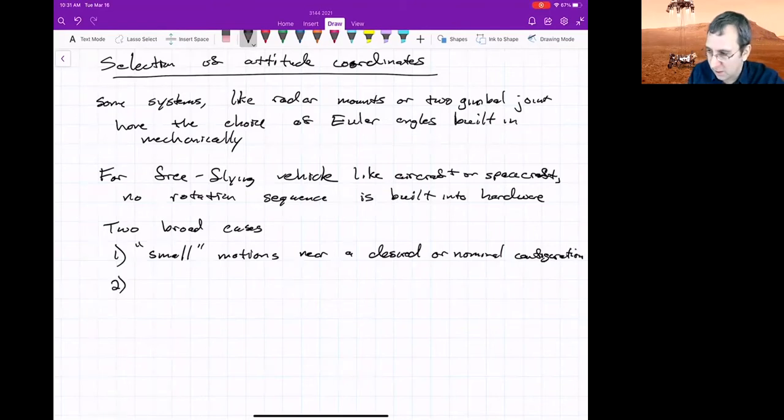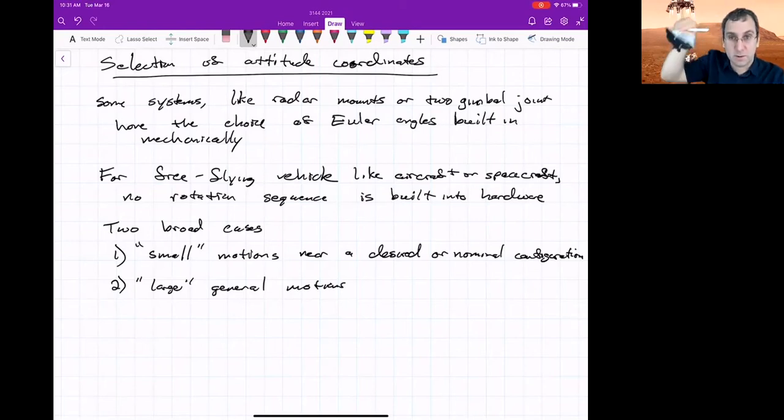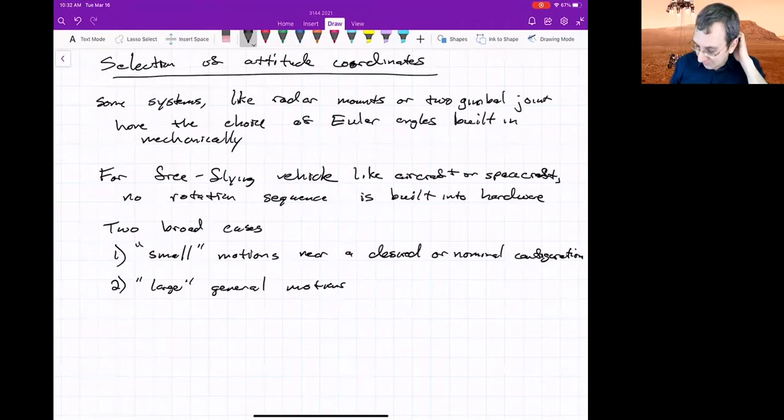Or if we're talking about large general motions. The example I showed earlier with the space shuttle moving all crazy all around, that was definitely a large general motion. But for small motions, virtually any of the attitude coordinates in chapter three of the book could be used. It's the large motions where you'll probably need to use something like the quaternions, the Euler parameters.